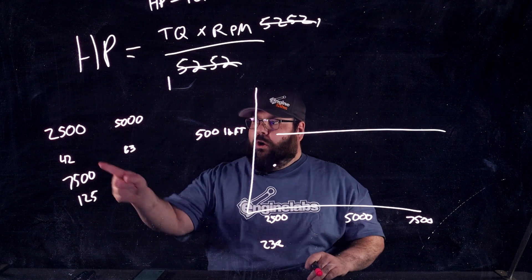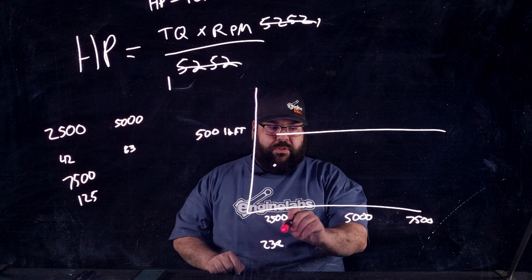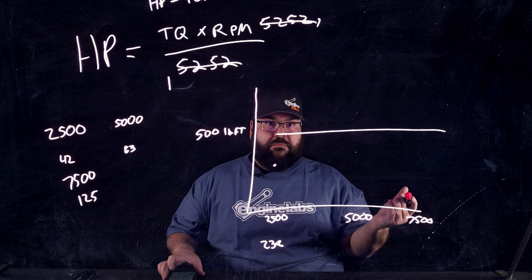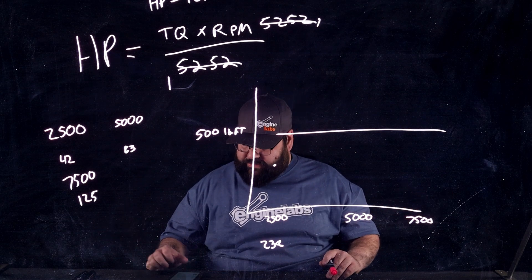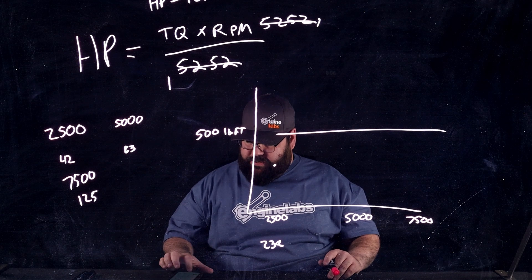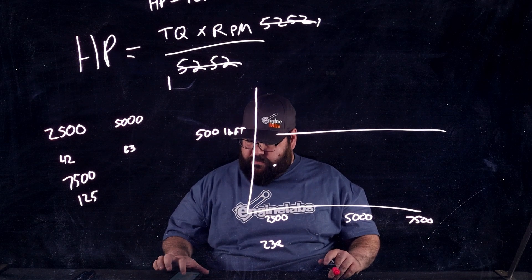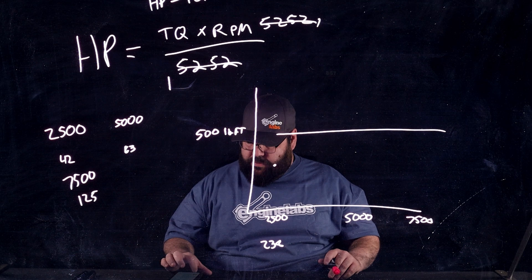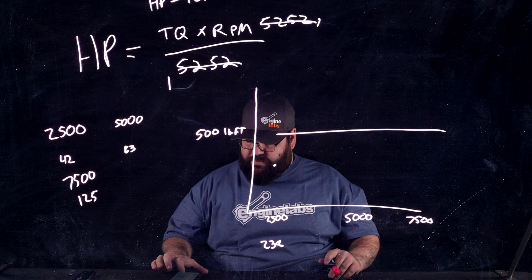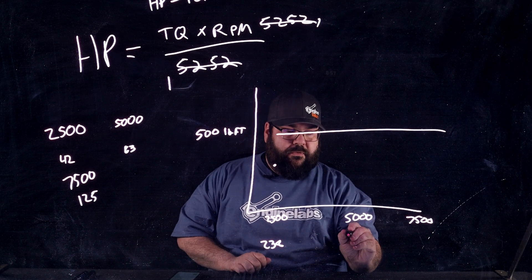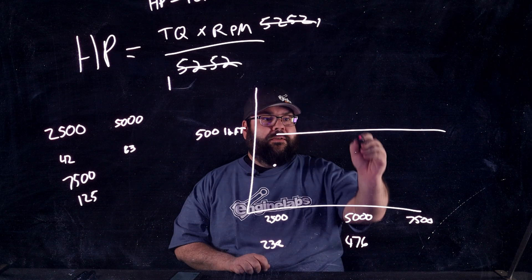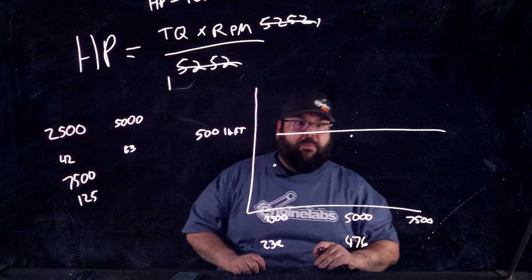Okay? So, if our equation holds, 5,000 is going to come in at exactly double, right? So, let's see. 500 pound-feet of torque times 5,000 RPM divided by 5,252. And we get 476, which is exactly double, right?